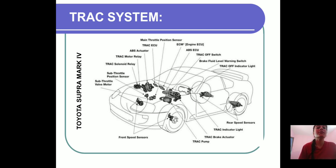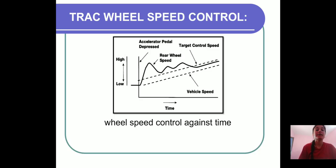This is a car based on traction control system. Basically, when a car or any vehicle is based on traction control system, then the chances of accidents will be reduced. And this is a TRAC wheel speed control against time. With this speed we get the target control speed of the vehicle.